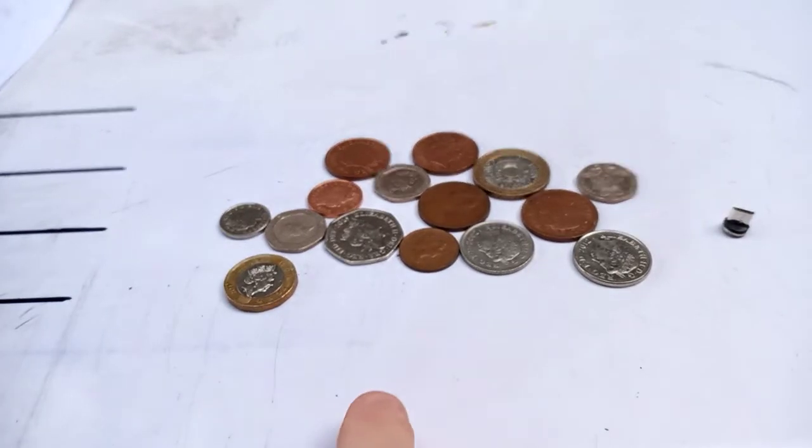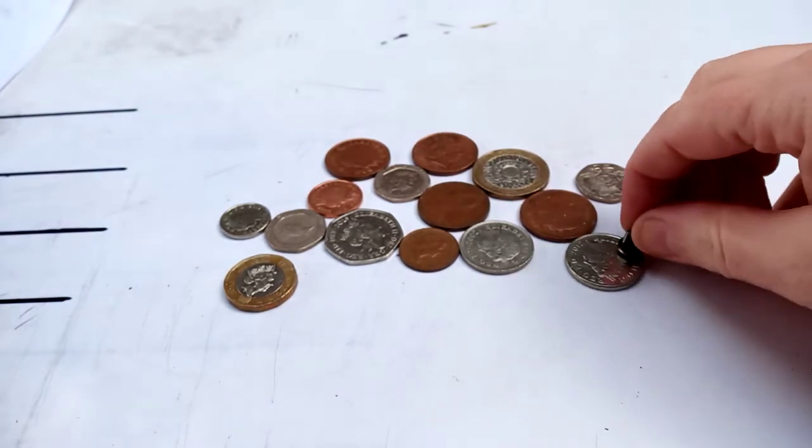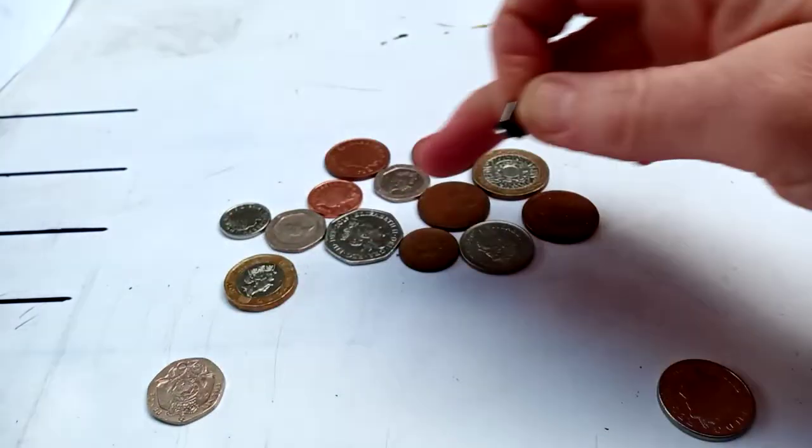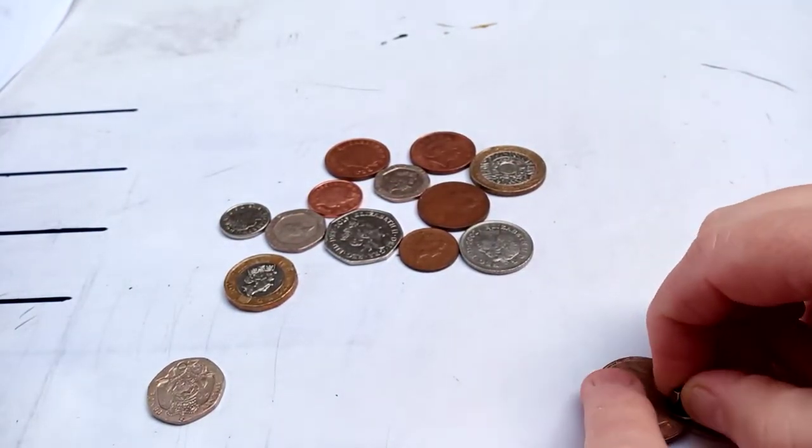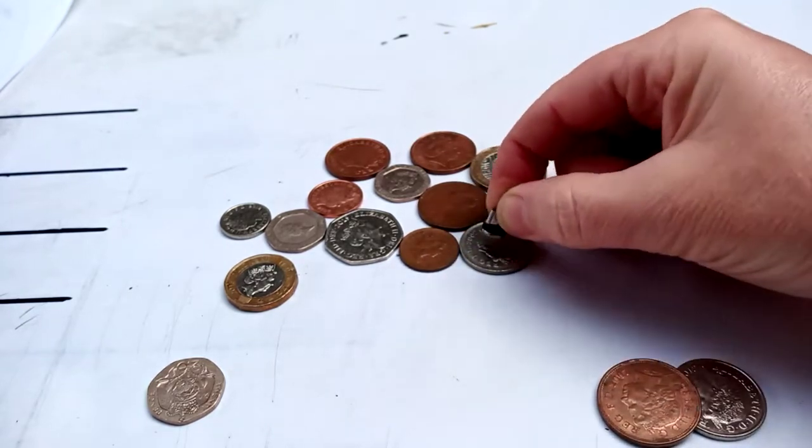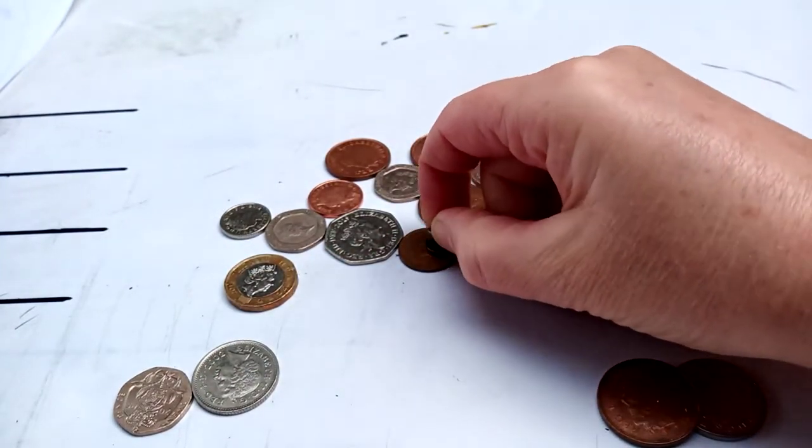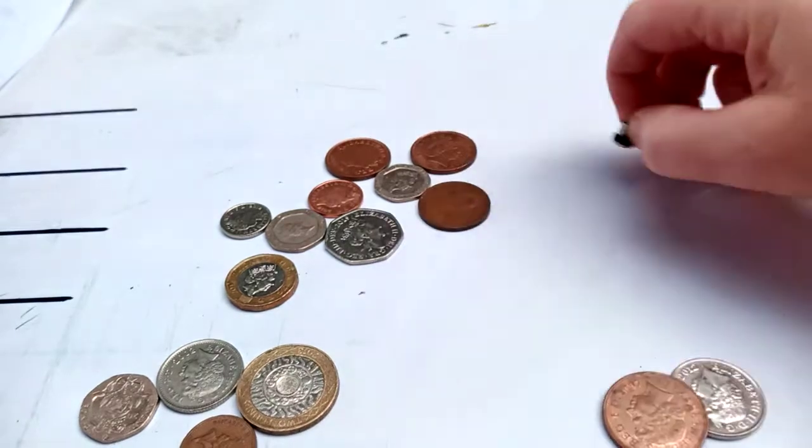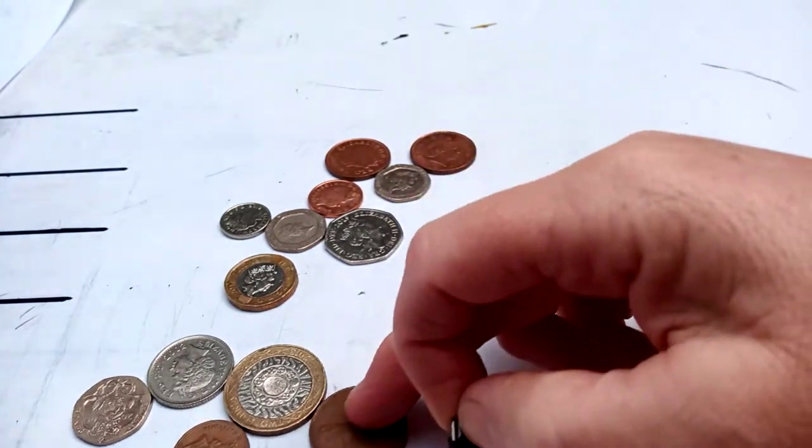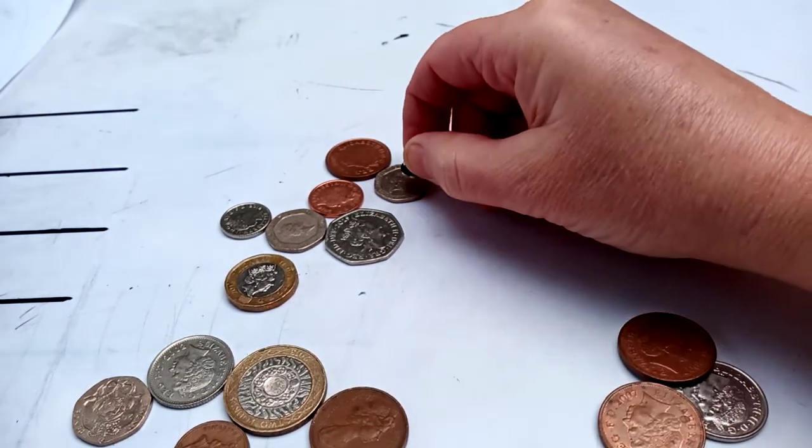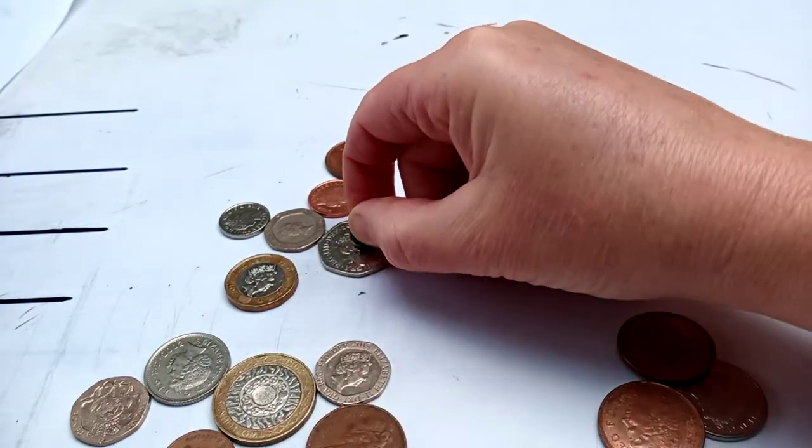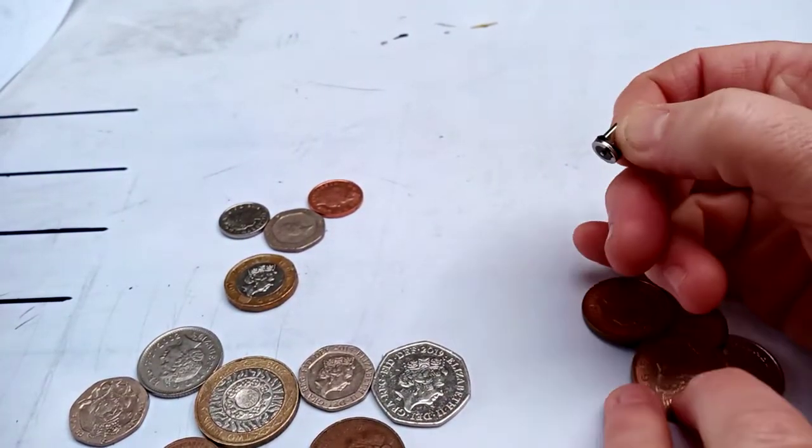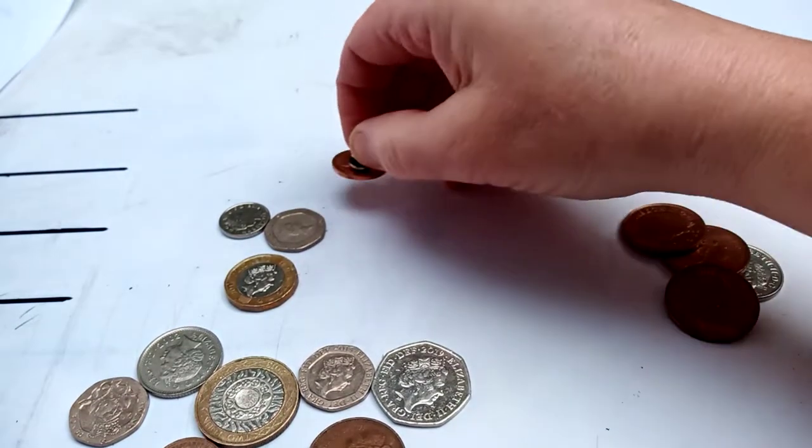And coins that are kind of magnetic in the middle. So here goes, magnetic, bingo, he goes there. Magnetic, not magnetic, not magnetic, not magnetic, not magnetic, magnetic, magnetic, magnetic, magnetic, magnetic.